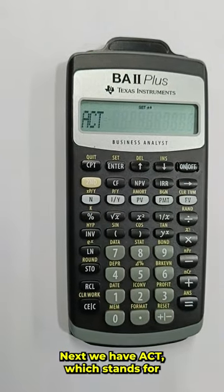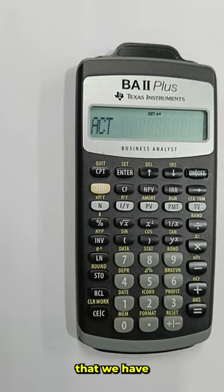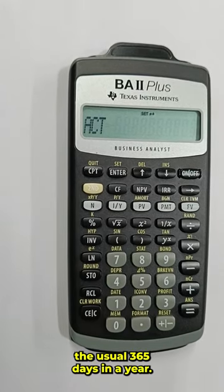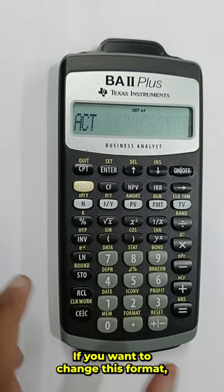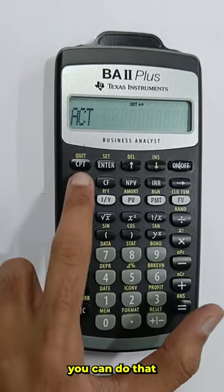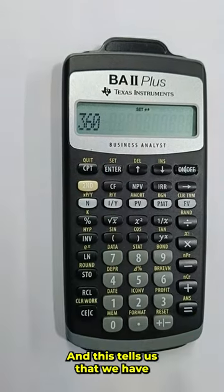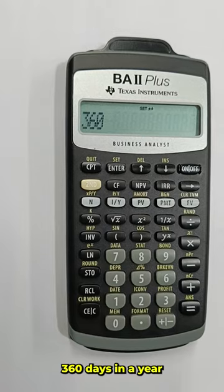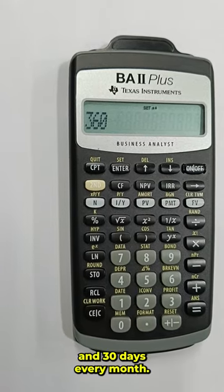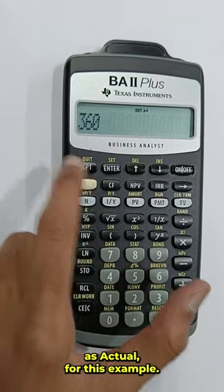Next we have ACT which stands for actual. This states that we have the usual 365 days in a year. If you want to change this format you can do that by pressing second and then enter, and this tells us that we have 360 days in a year and 30 days every month. But let's keep it as actual for this example.